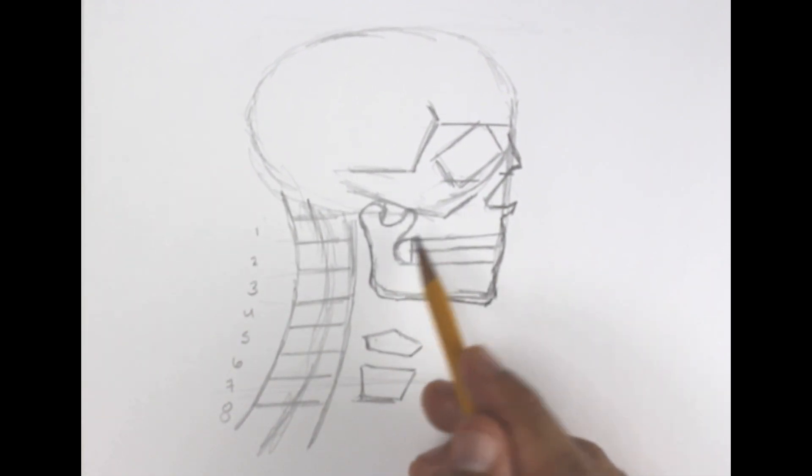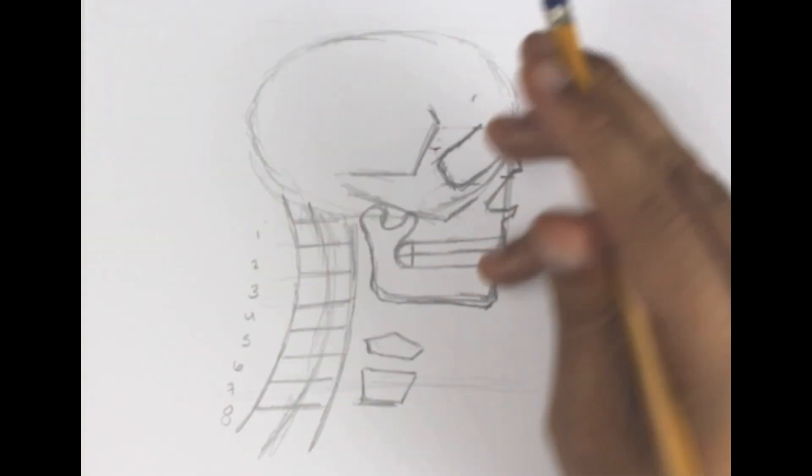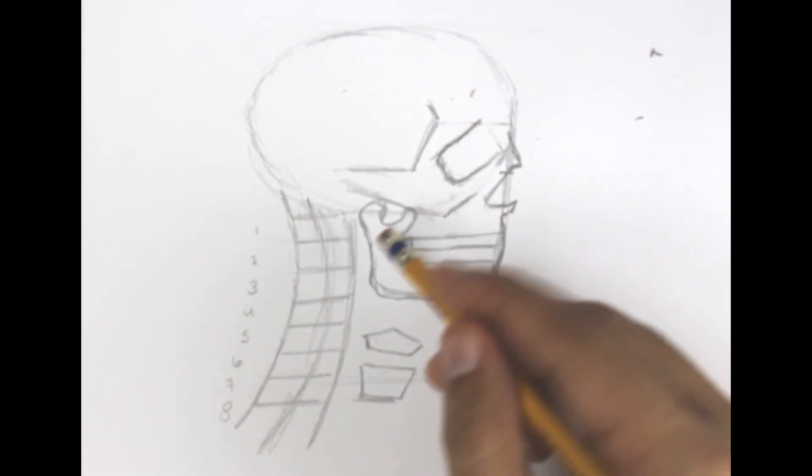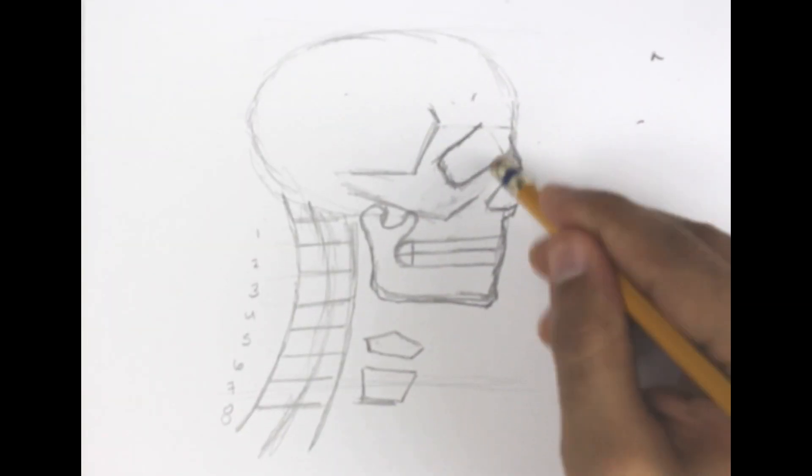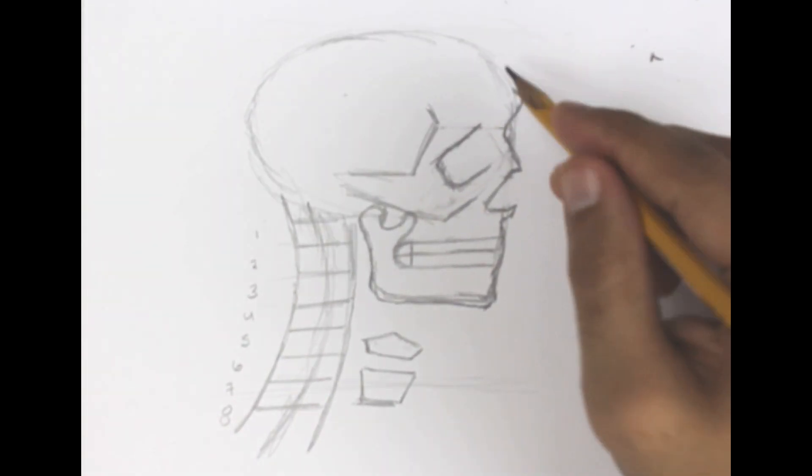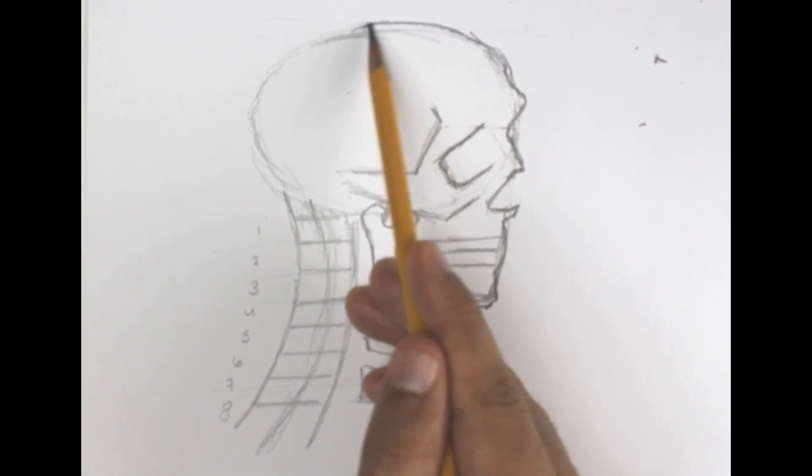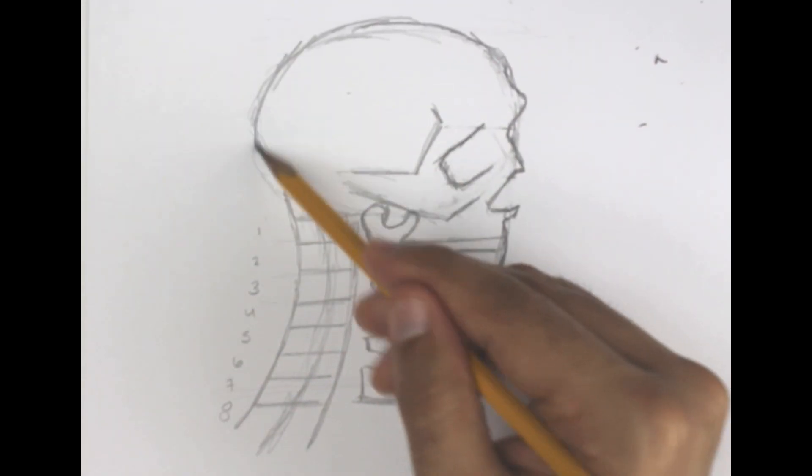Start putting in the shape for the jaw and you can start redefining the eye socket and whatnot. Make sure that it doesn't stay completely rectangular, so you do want to erase the front part. In all actuality I think that my head on the back could have been a little bit bigger.